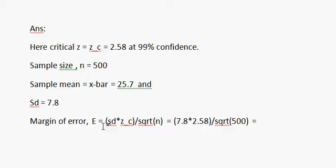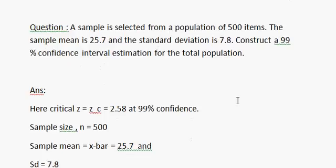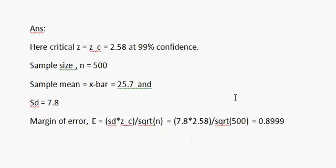Now we need to find out 99% confidence interval for population mean. As we know, confidence interval is sample mean minus margin of error, sample mean plus margin of error.